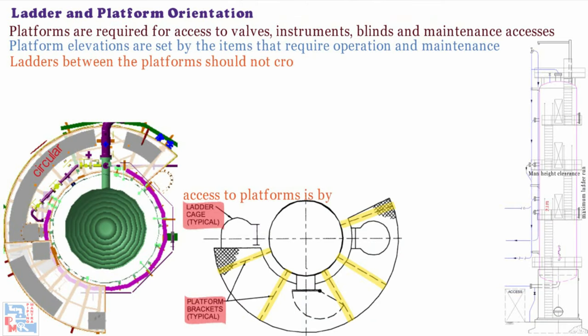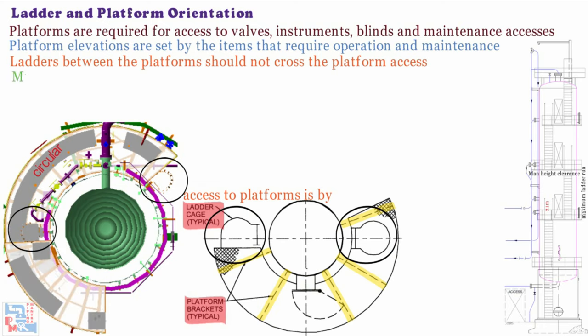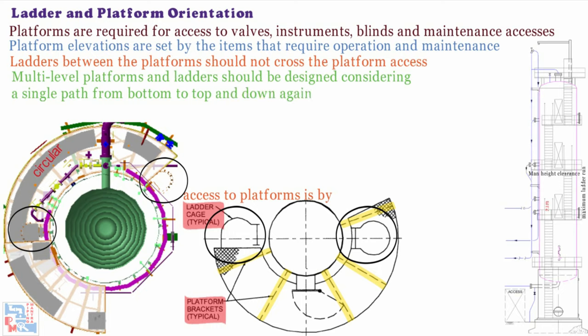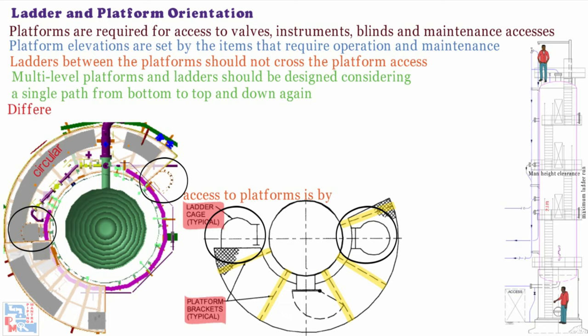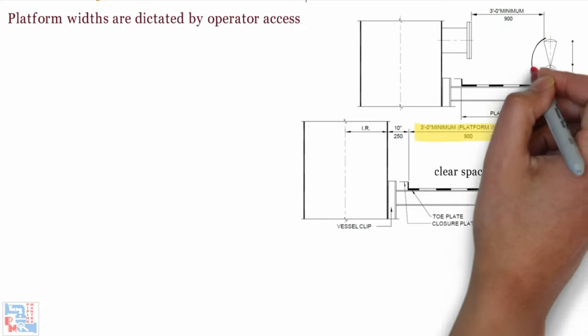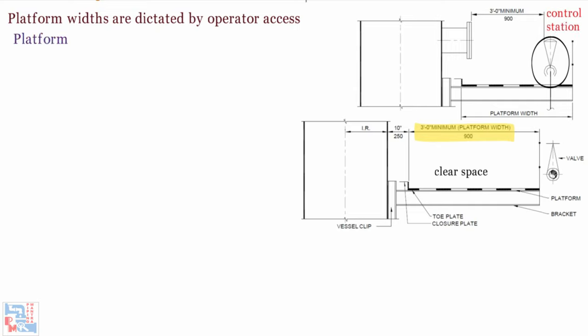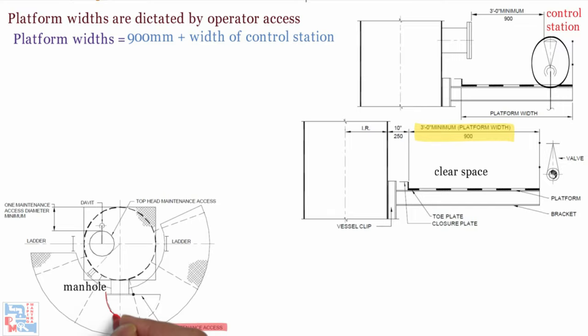Ladders between the platform should not cross the platform axis it should be on side of the platform. Multi-level platforms and ladders should be designed considering a single path from bottom to top and down again. Different paths to access different items on the same level should be avoided. Platform widths are dictated by operator access. The clear space on platform width shall be minimum 3 feet or 900mm. For platforms with control stations, the width of platform shall be 900mm plus the width of control station. The platform for manholes and maintenance access adequate space for swing the cover flange must be provided.